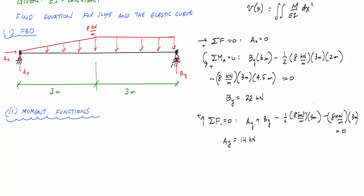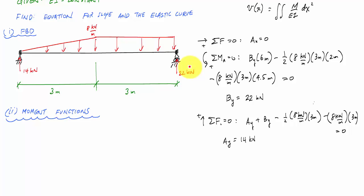Now we're going to determine the moment functions — the first big part of using the double integration method. I like to redraw my free body diagram with Ay equal to 14 kilonewtons and By equal to 22 kilonewtons. I first identify discontinuities: concentrated forces, concentrated moments, and beginnings and ends of distributed loads. Then I determine how many cuts I need, because the number of cuts corresponds to the number of moment functions needed to describe the entire beam length.